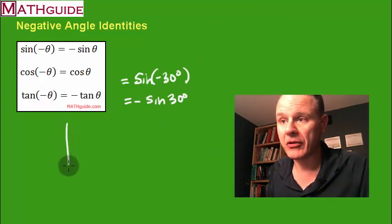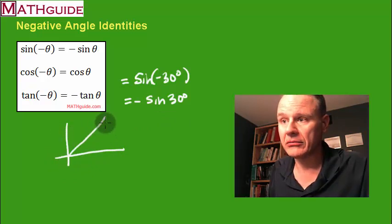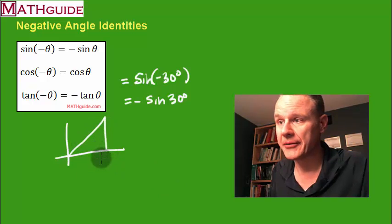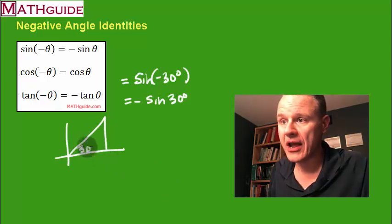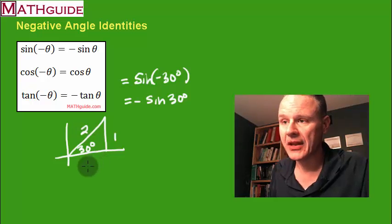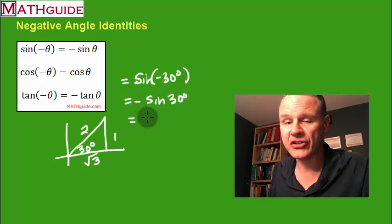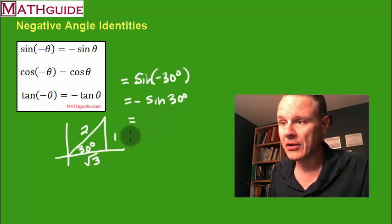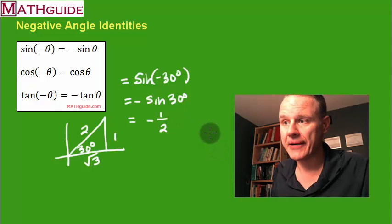When I do these problems, I imagine a 30 degree angle. So here's 30 degrees. If I have a 30 degree angle, I know the opposite is 1, the hypotenuse is 2, and the adjacent side is the square root of 3. The definition of sine is opposite over hypotenuse, which is 1 over 2. And of course I have to take the opposite of that, giving negative one-half.